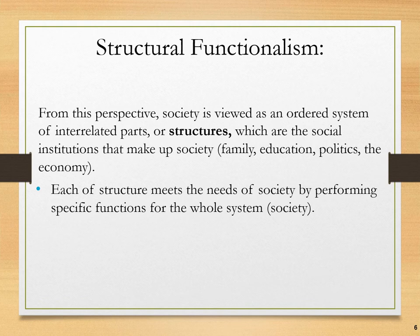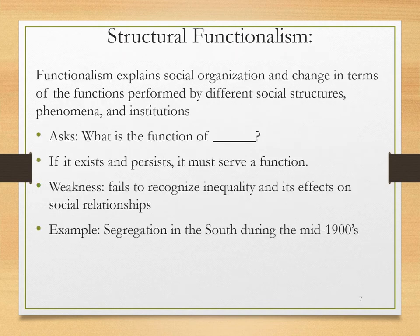Things like family, education, politics, the economy, sports teams, religions, corporations — all of these elements can be seen to be social structures. Each structure meets the needs of society by performing specific functions for the whole system, i.e. specific functions for all of society. Functionalism explains social organizations and change in terms of functions performed by different social structures, phenomena, and institutions. So a functionalist may be likely to ask, what is the function of this thing? And if a given social structure exists and persists, thus it must serve some social function.